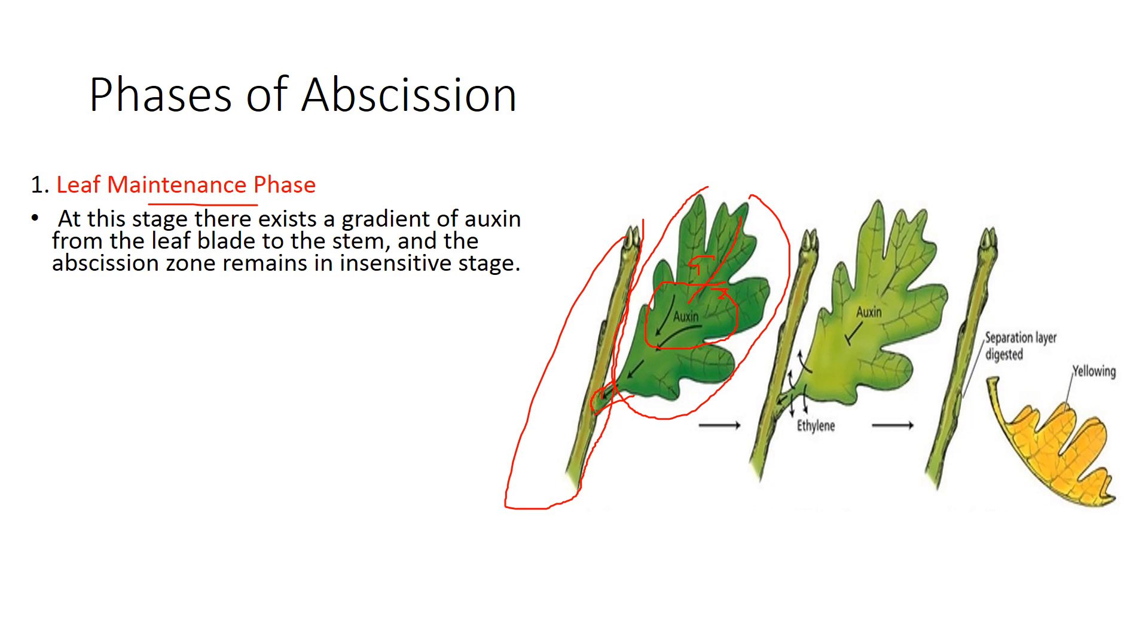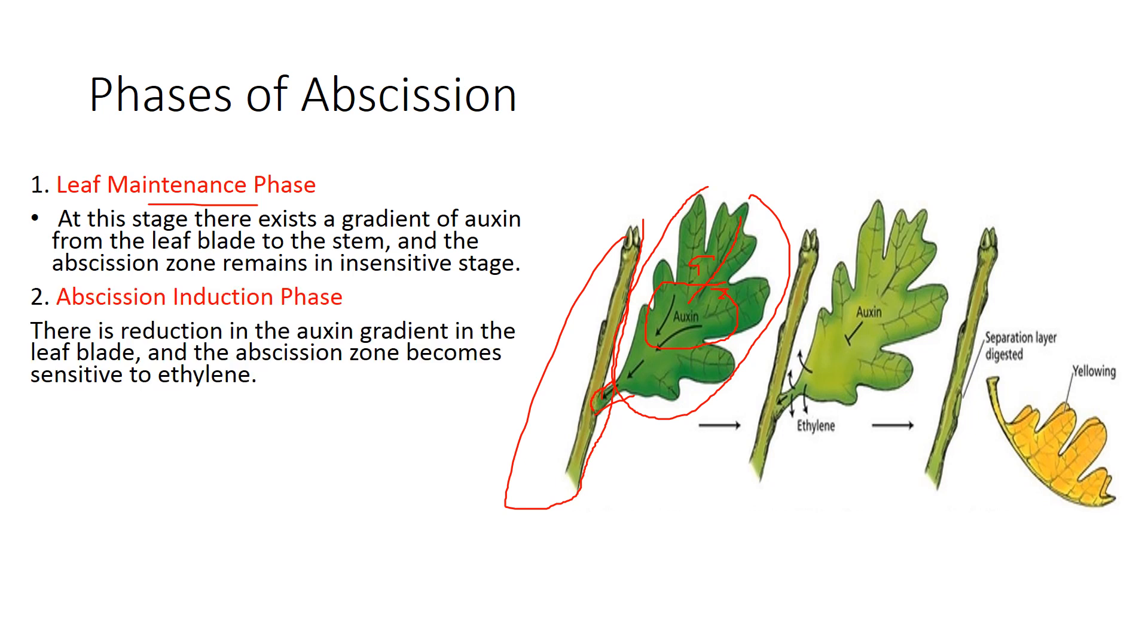As the leaf starts aging, you can see here the color of the leaf changes because of the degradation of the chlorophyll pigment. And auxin synthesis also lowers, so the gradient will reduce. And then this abscission zone formation takes place. That's why the second phase is known as the abscission induction phase.